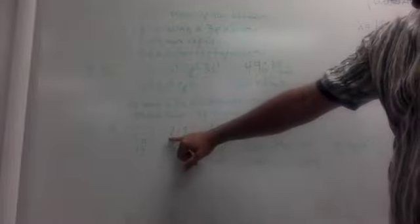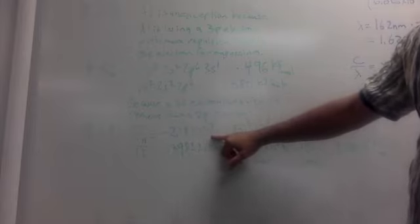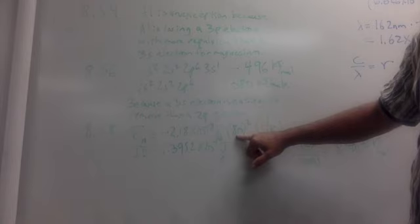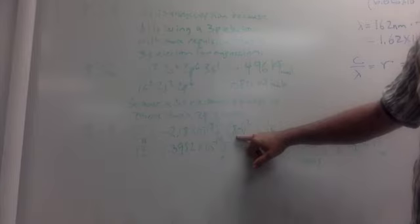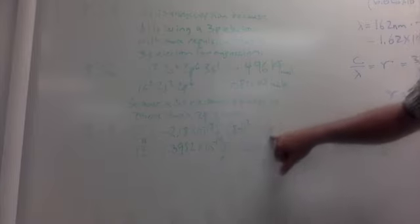The Bohr equation is 2.18 times 10 minus 18 joules, z squared. Well, z, when you have only one electron left, is going to be the 80 protons in the nucleus, 80 squared. And the electron will be removed from n equals 1, the first energy level. The 80th electron has to come from the first energy level, the 1s.